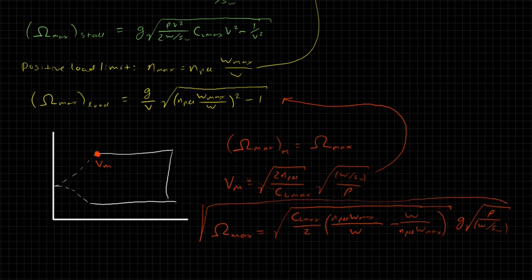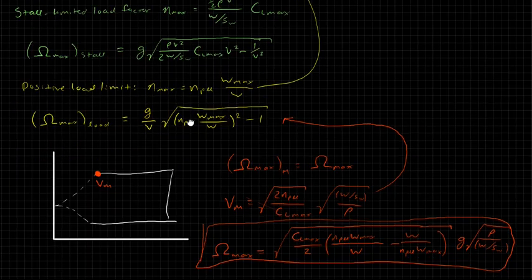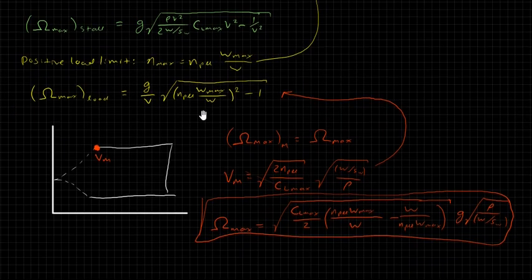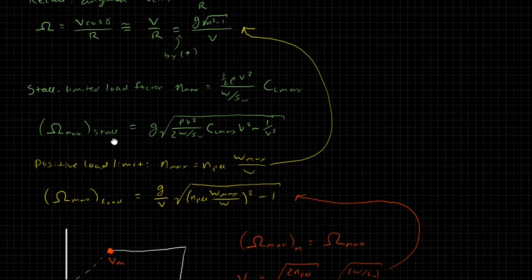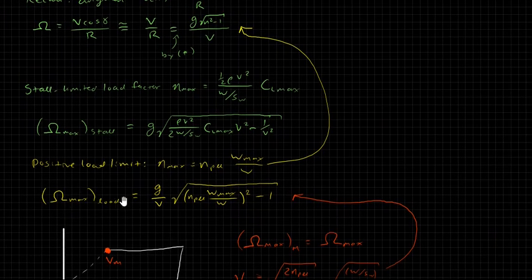And there you have it, your maximum turning rate. So just as a review, we found this maximum turning rate, this final answer here, by finding the maximum allowable turning rate that's stall limited and the maximum load limited turning rate, and then plugging in the maneuver velocity into either one of those equations, and that gave us our maximum turning rate.